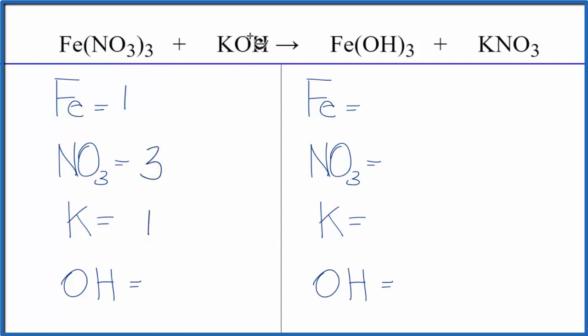And this OH, that's another polyatomic ion called the hydroxide ion, and it stays together too. We have an OH here and then right here again is the hydroxide ion, so we're going to say we have one hydroxide. On the product side we have one Fe, one nitrate, one potassium, and then three of these hydroxides.